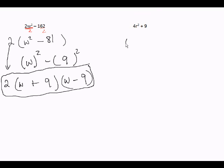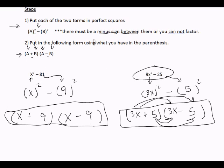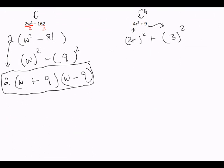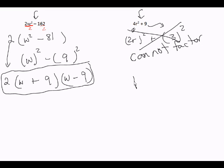For the final problem, I can see something squared and something squared — I could put 2r here for 4r², and 3 here for 9. But wait — look what's between these two. This is a plus sign. What was between the other ones we did? A minus. Let's go back and read the instructions: there must be a minus sign between them, or you cannot factor two terms. So you have to have a minus sign between two terms or you cannot factor it. I cannot factor this. When you cannot factor something, we call it prime. The answer to this one is prime.